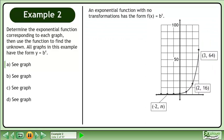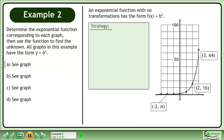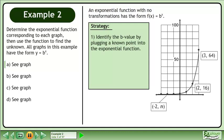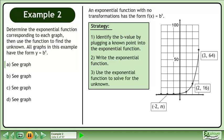An exponential function with no transformations has the form f equals b to the x. Let's outline a strategy to solve this problem. First, identify the b value by plugging a known point into the exponential function. Next, write the exponential function. And finally, use the exponential function to solve for the unknown.